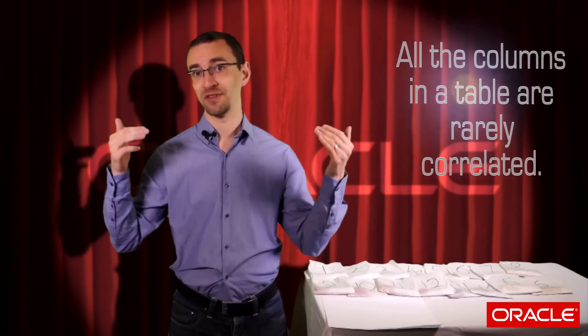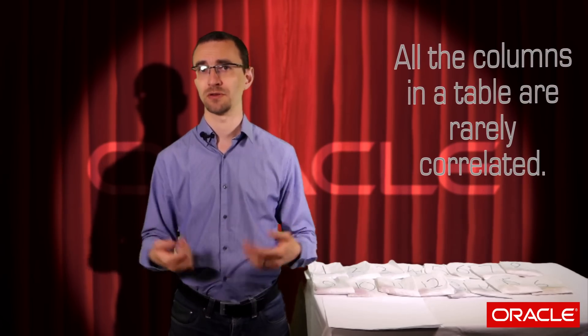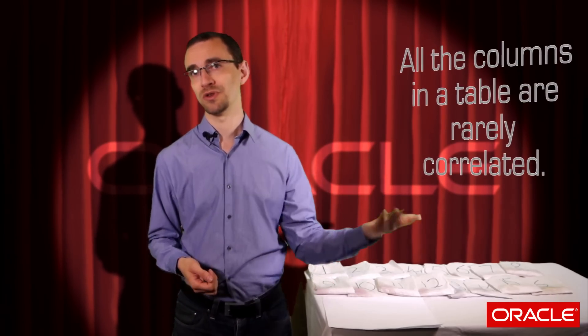In general, it's rare that all the columns in a table are perfectly correlated. So sorting by one column or one set of columns means that they're disordered by the other columns.